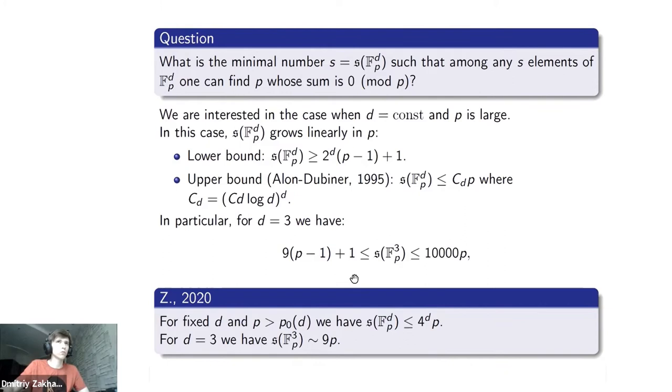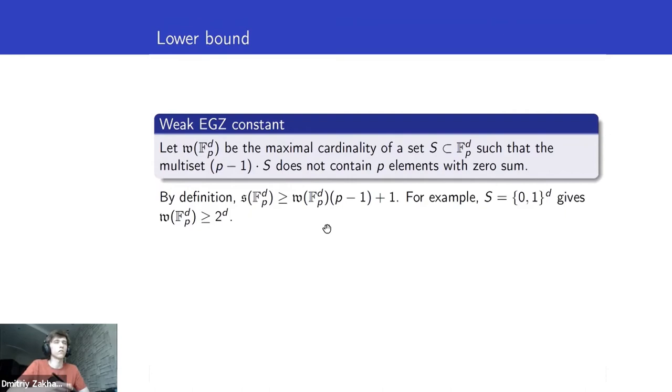Now I want to speak a little bit about lower bounds in this problem. In particular, I will show you why you see here 9 instead of 8 as you might conjecture at the first glance. So you see, this cube should be not optimal. How do we construct, how do we prove lower bounds in this problem? We should provide a set of some points in our space so that something holds. In the example of the cube, they just took some finite set and took each point from the set with multiplicity p-1. So let's try to generalize this idea.